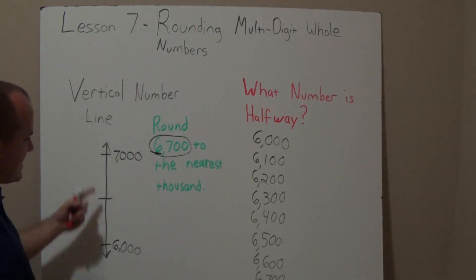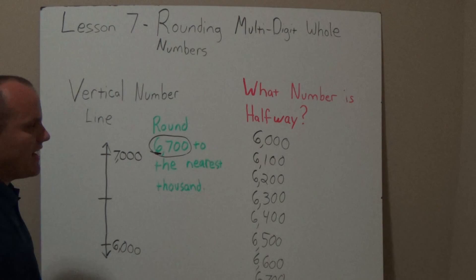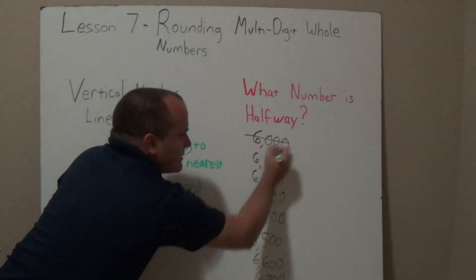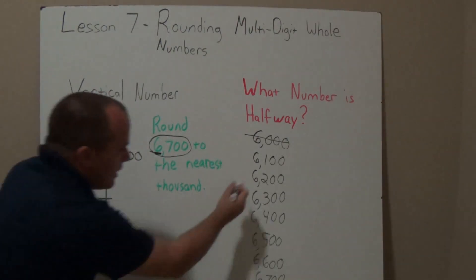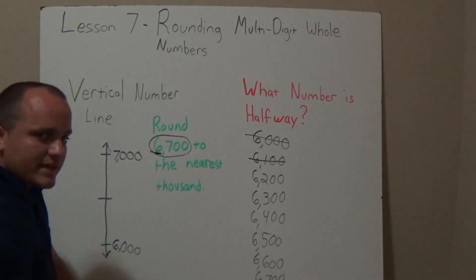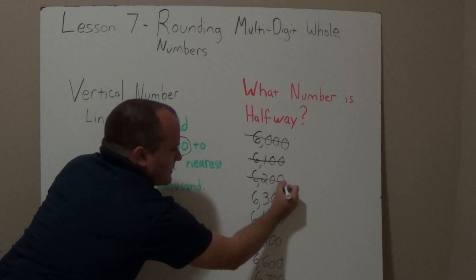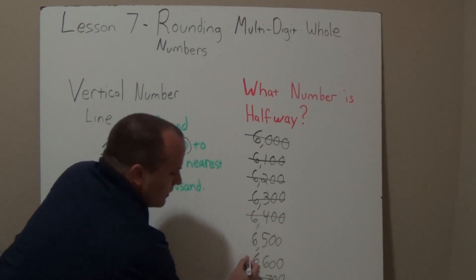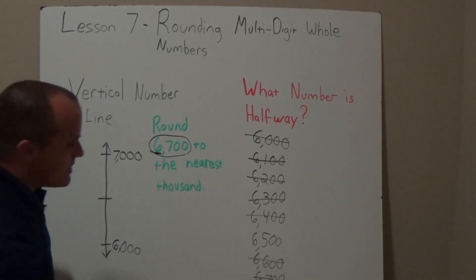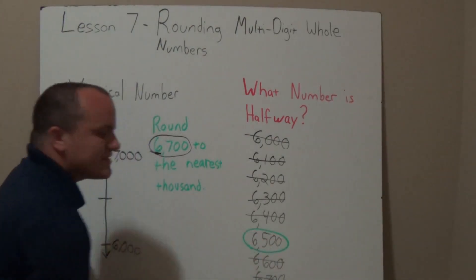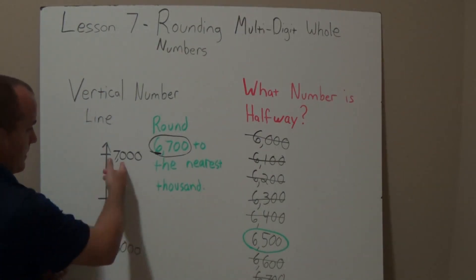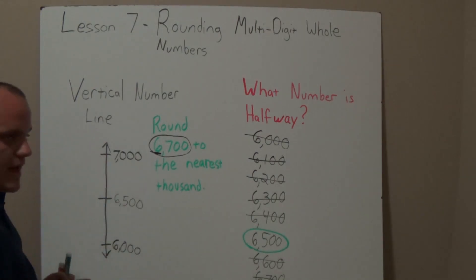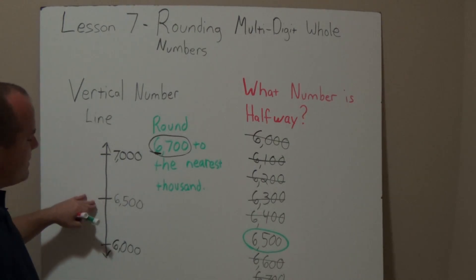I'm trying to figure out the halfway point between 6,000 and 7,000. I'll start at the top and bottom at the same time and scratch them out one at a time — one off the top and one off the bottom, continuing until only one number is left. There's only one number left and that number is 6,500. So 6,500 is the halfway point between 6,000 and 7,000, and I'll write that on the middle line of my vertical number line.